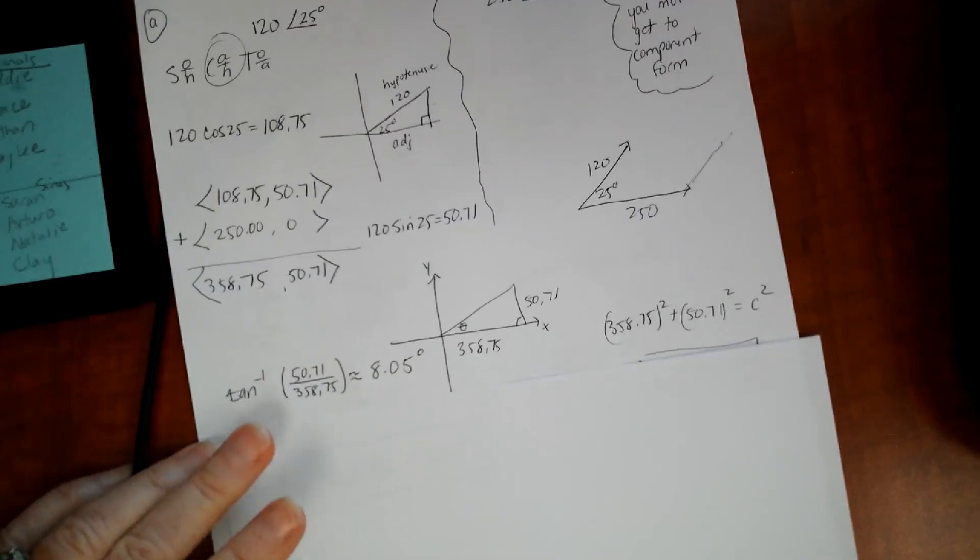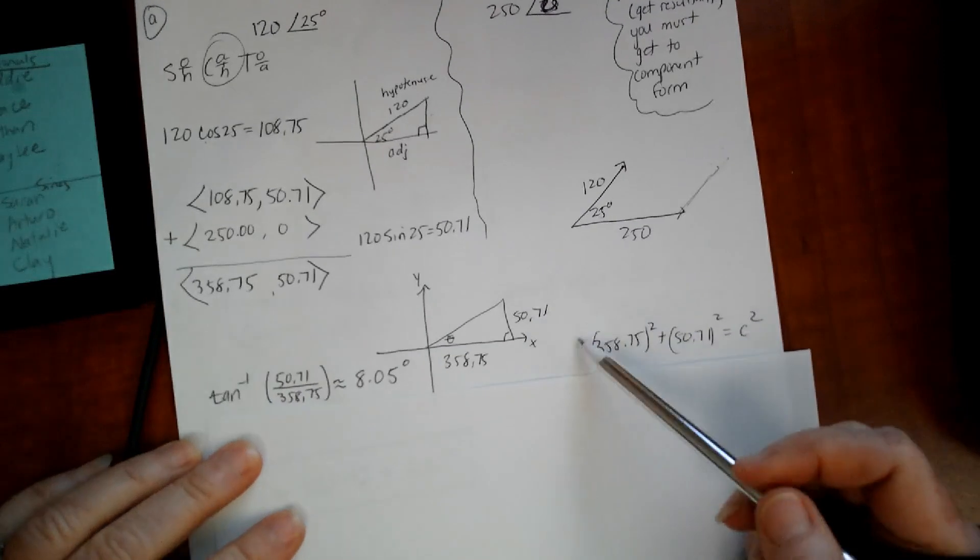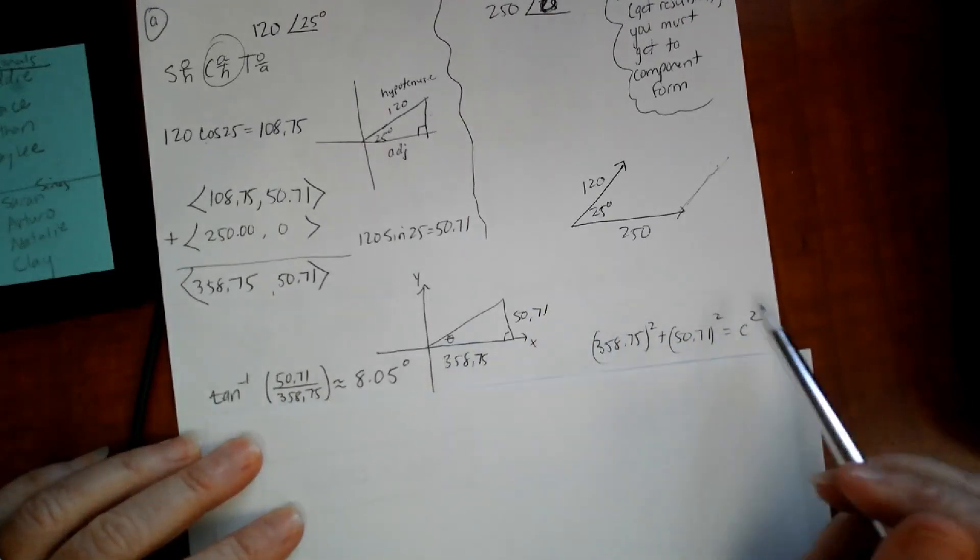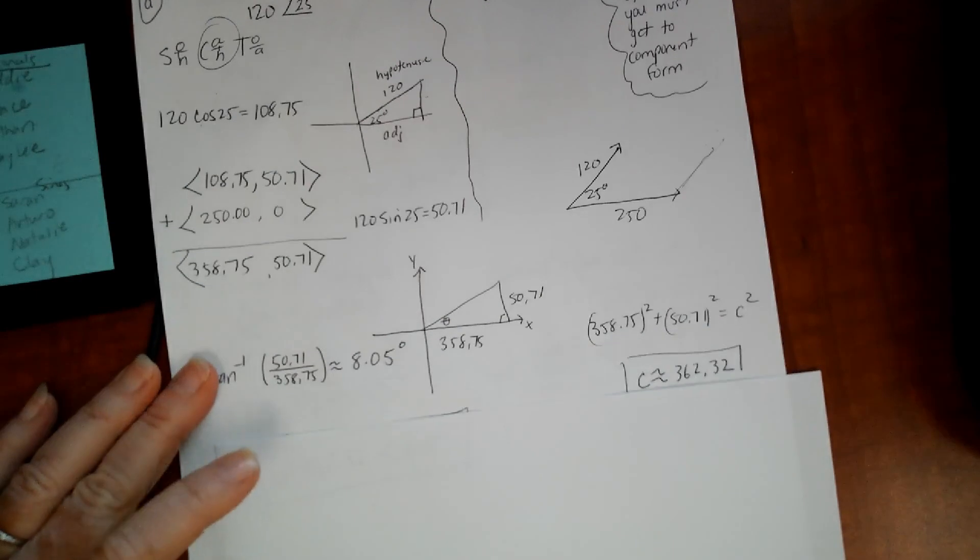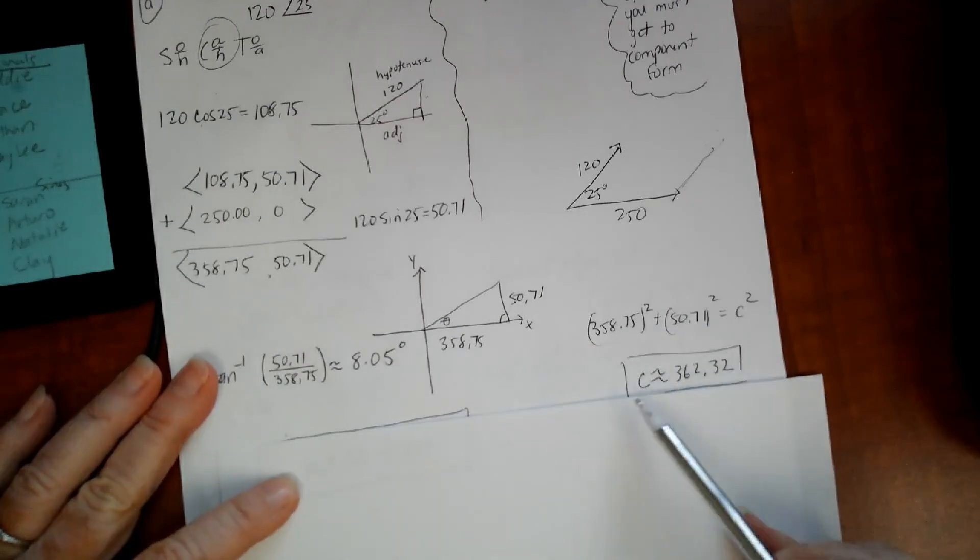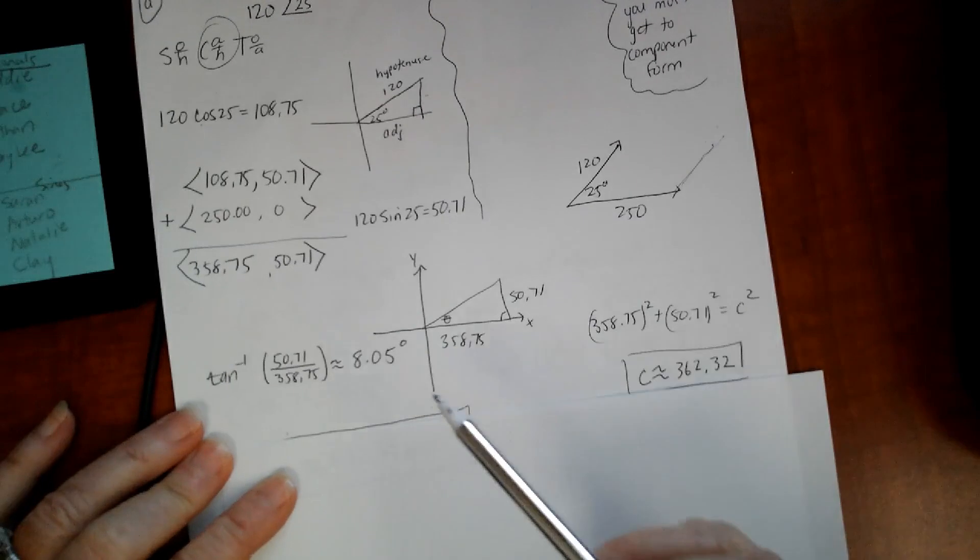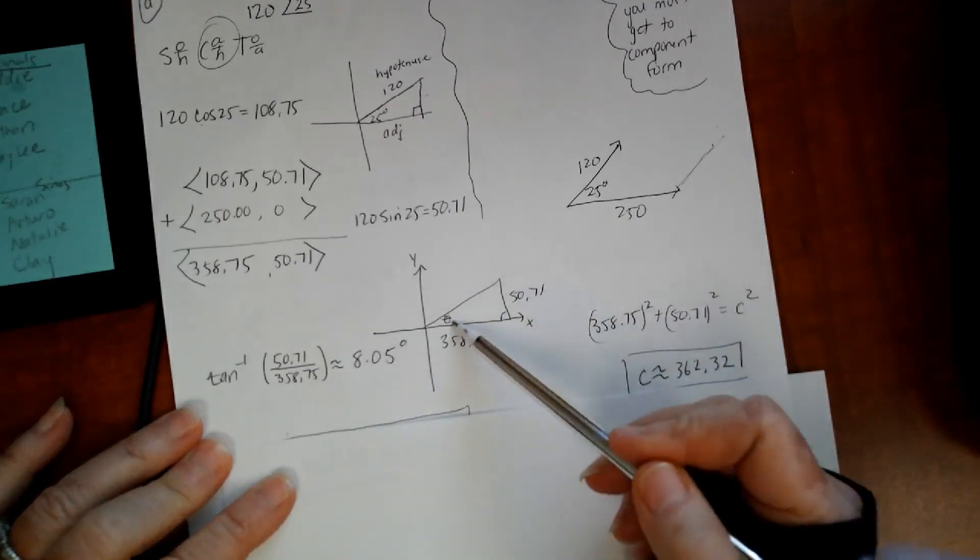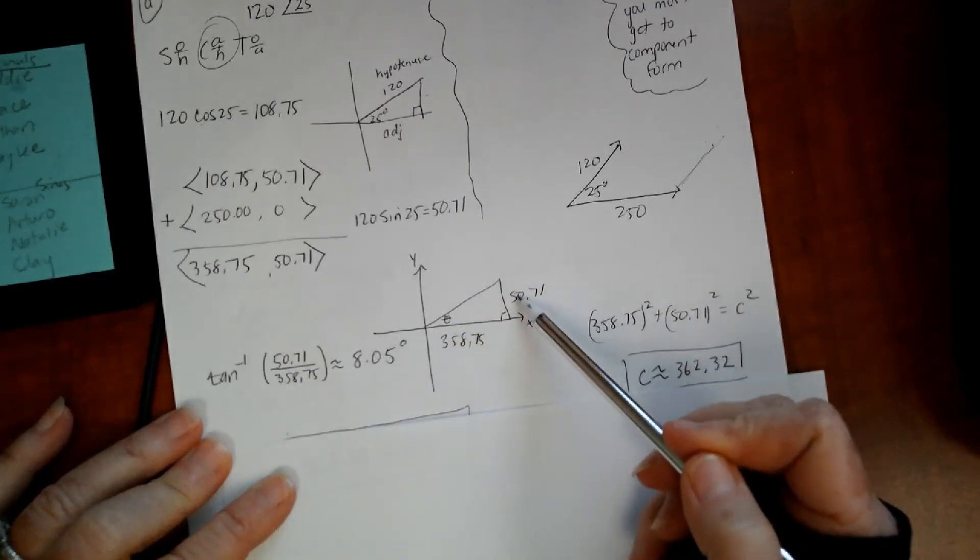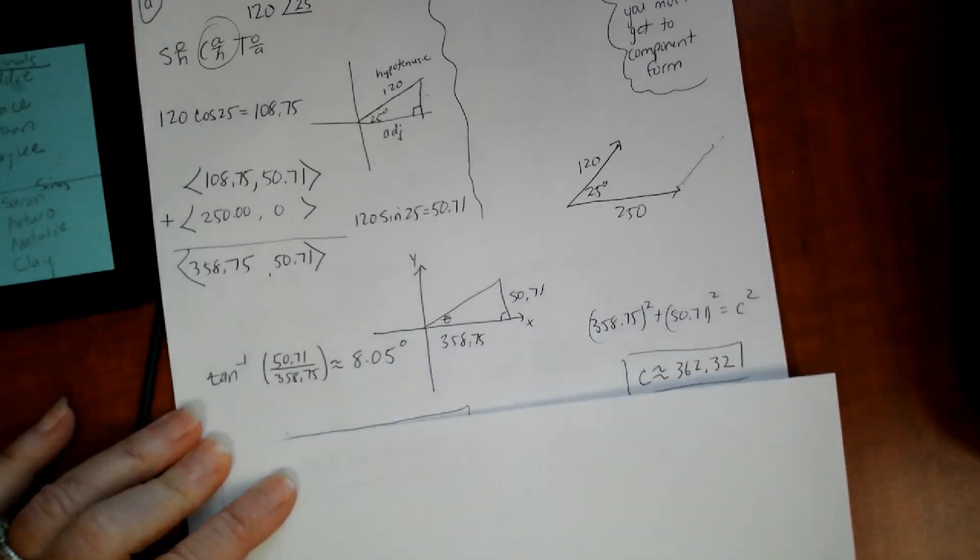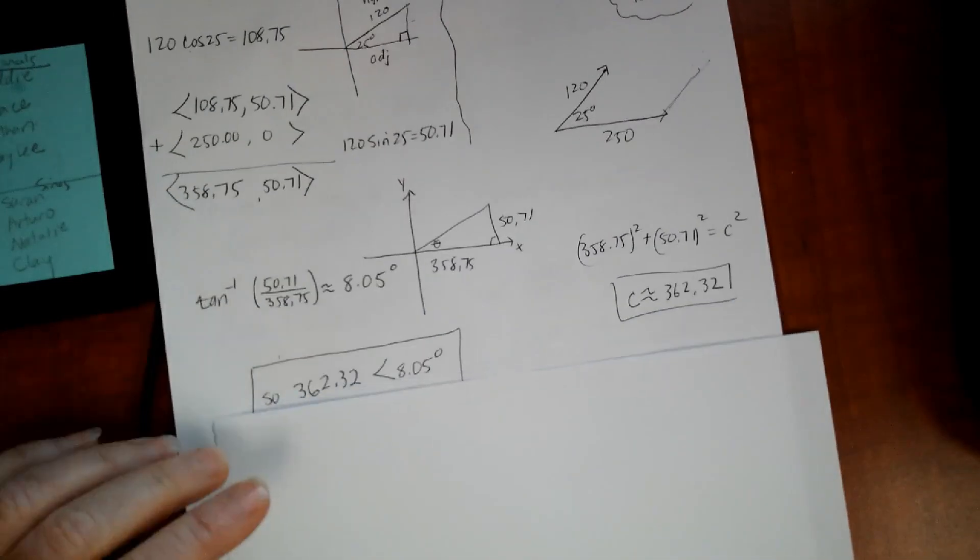What I'm going to do is get the magnitude and direction. I think I did that first. I got, you know, a squared plus b squared equals c squared. So I did all that work, and I got 362.32. And then for the direction, I used inverse tangent, because it's opposite over adjacent.